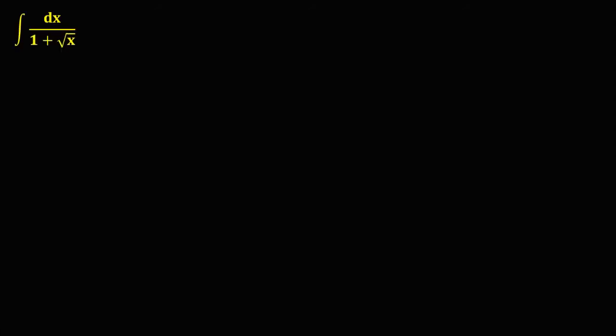For this given, we let u equal to the function with the radical. So u is equal to the square root of x. Then to eliminate this radical, we need to square both sides, so we have u squared is equal to x.